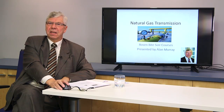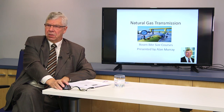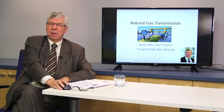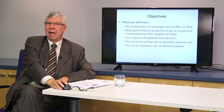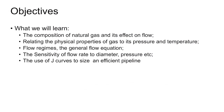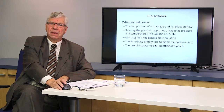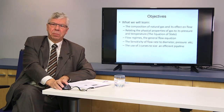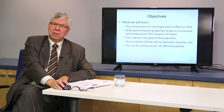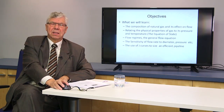Welcome to this bite-sized course from Rosen on the topic of natural gas transmission. The learning objectives include an understanding of the composition of natural gas and how that affects flow rates. We'll relate the physical properties of the gas to its pressure and temperature through the equation of state, look at flow regimes and their impact on the general flow equation, examine the sensitivity of variables like diameter and pressure to flow rate, and finish by looking at J curves to design an efficient pipeline.